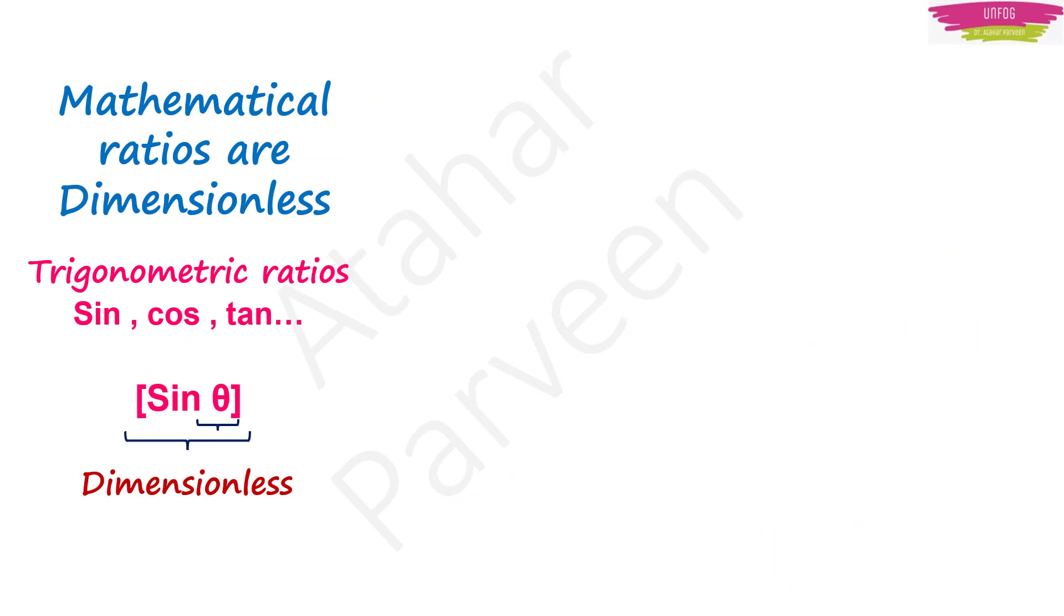Also, one more important point is that the mathematical ratios, they are often dimensionless. They do not have dimension. For example, in sin theta, theta and sin theta both are dimensionless. Similarly, log x and exponential x are also dimensionless. We can use this point as a trick in finding the dimensions.